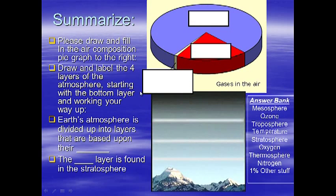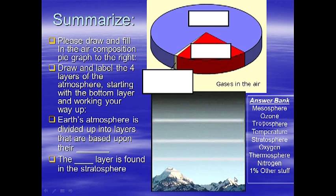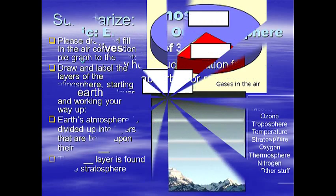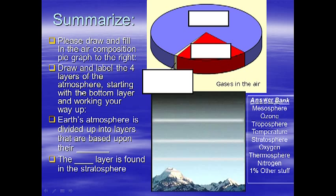To summarize: draw a pie graph and fill it with the atmospheric composition. Then draw the layers of Earth's atmosphere and label them. Complete the two bullet points below — you can always write your own summary. You need to do your summary for 20 points. Go ahead and pause this while you complete your summary, and we'll see you next time. Thank you.